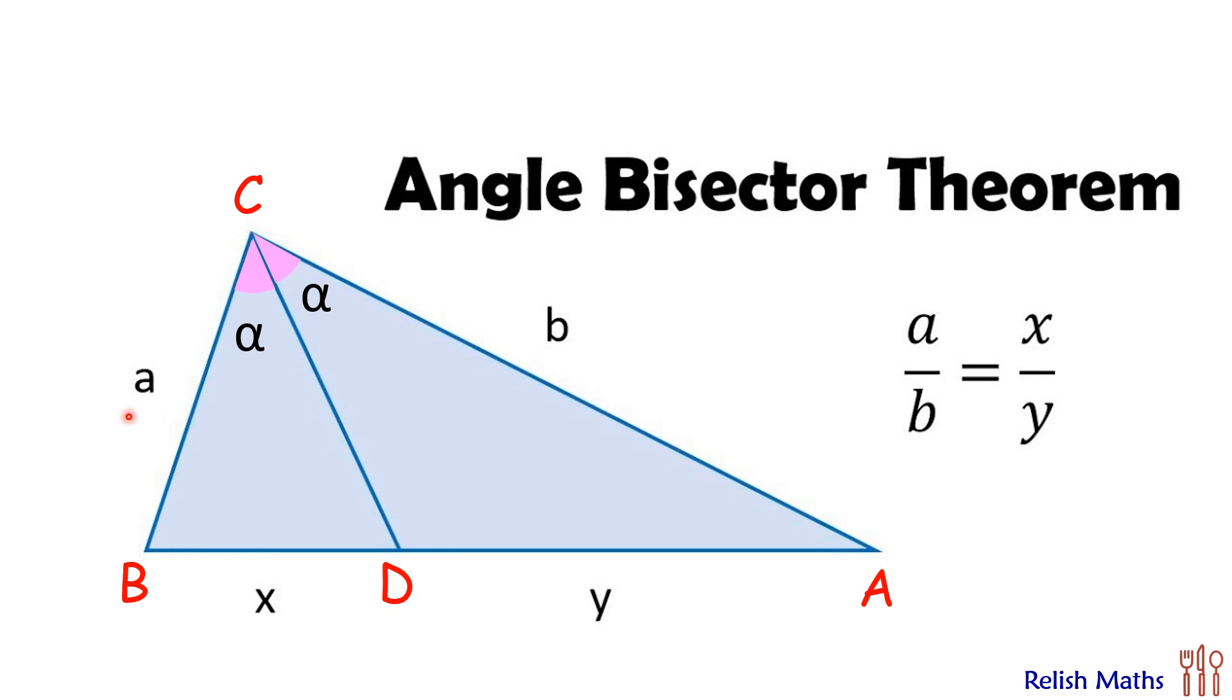Thus a upon b, that's the ratio of the side, is equal to x upon y, that's the ratio in which the opposite side is getting divided.